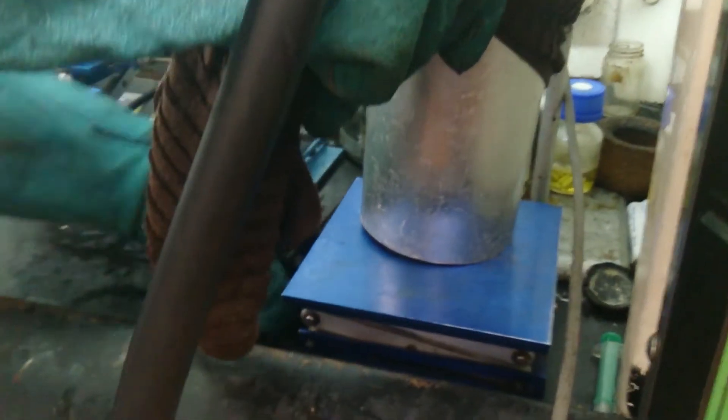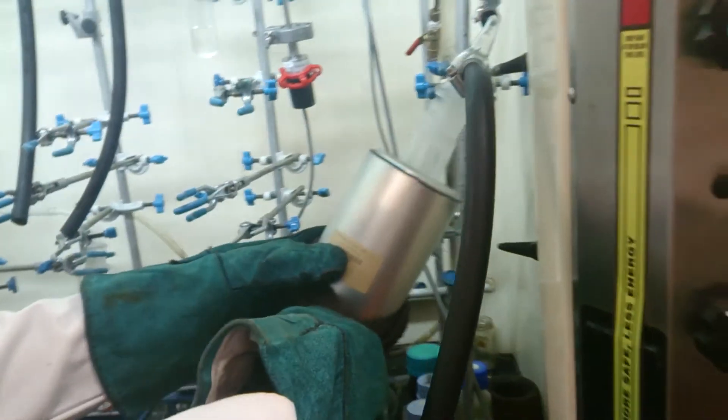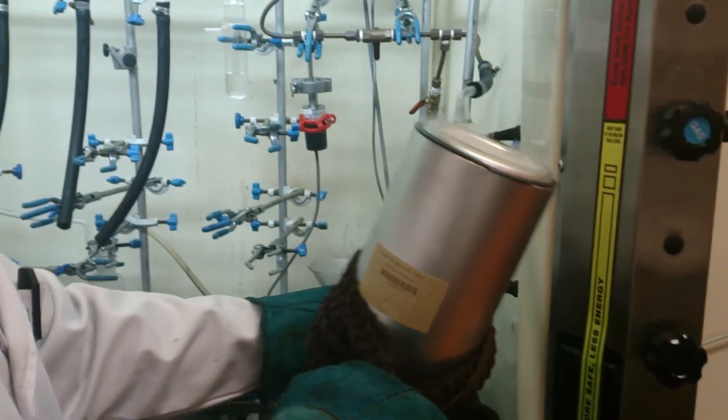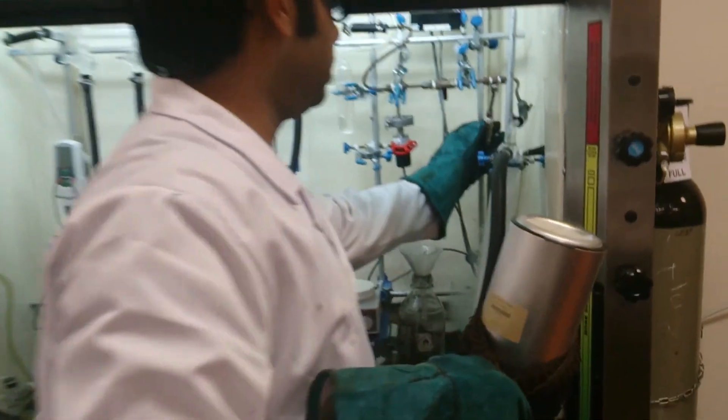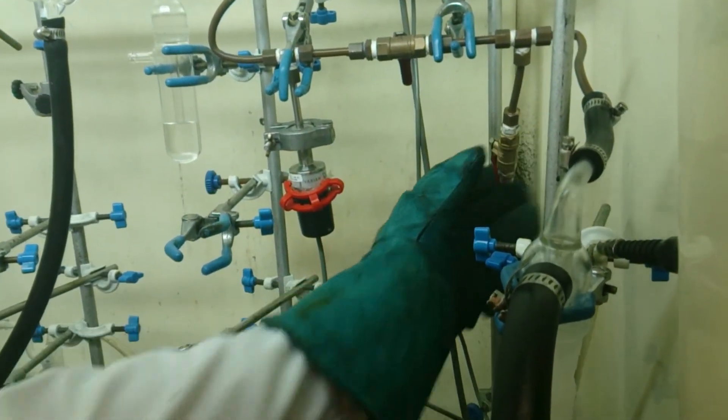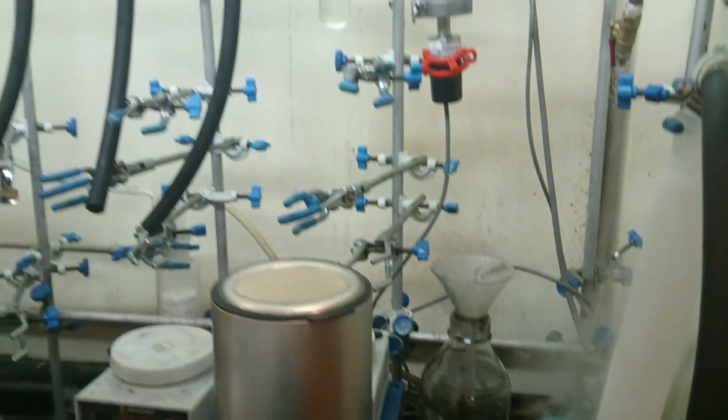After doing this we need to take out this Dewar flask. So we need to lower down this lab jack slowly. I need to take out this Dewar flask from the cold trap. Now after doing this we need to vent so that the air can go inside and the vacuum is released. So this is how we take out the cold trap. So thank you for watching this video.